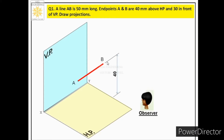End points A and B are both 40 mm above HP and 30 mm in front of VP. Since both endpoints are at the same distance from the horizontal plane, the line is parallel to HP. Similarly, since both endpoints are at the same distance from VP, the line is also parallel to VP. This is Case 1: a line parallel to both reference planes.